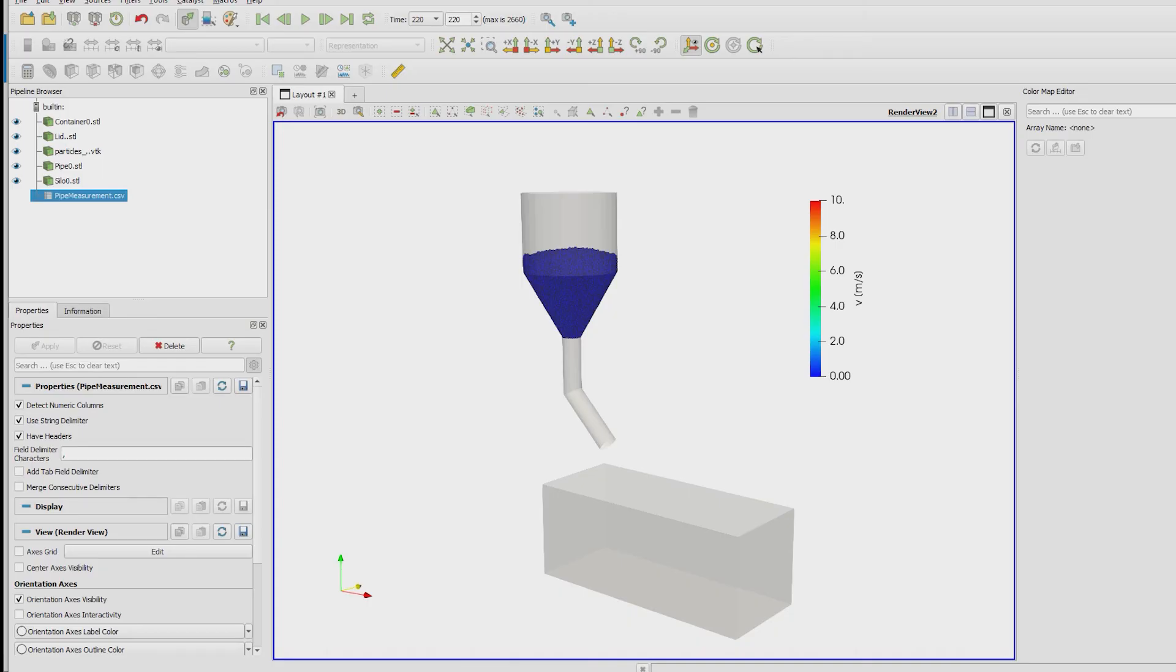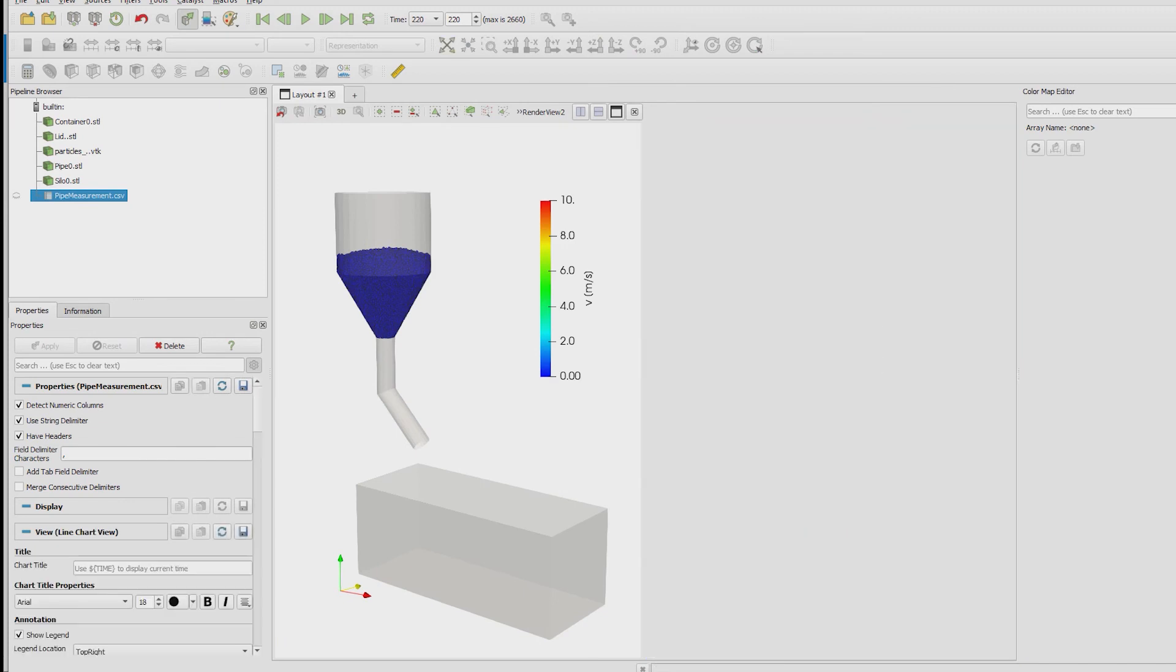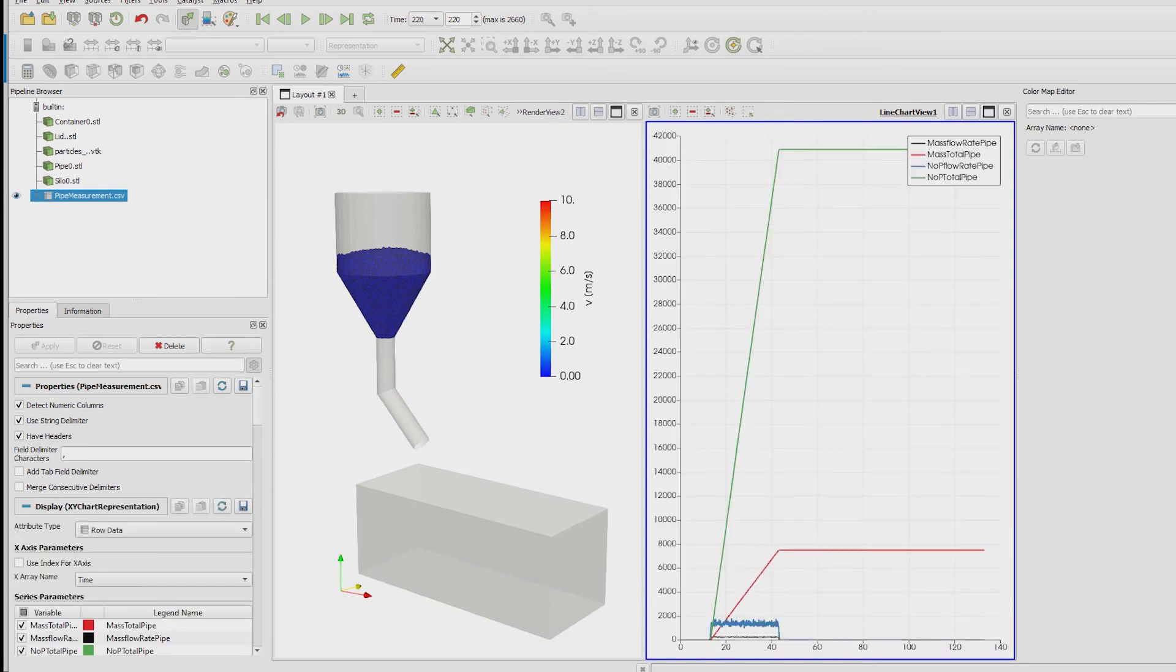To show the data we open a new view as line chart and activate our data from the CSV file pipe measurement. Here we can already see the four graphs for total mass, total particle number,